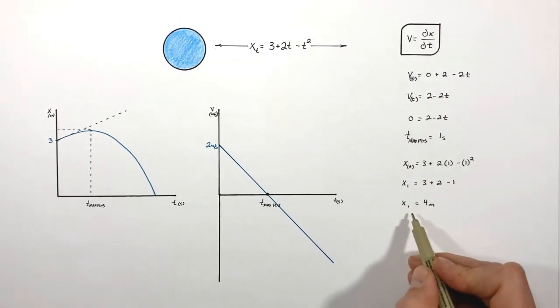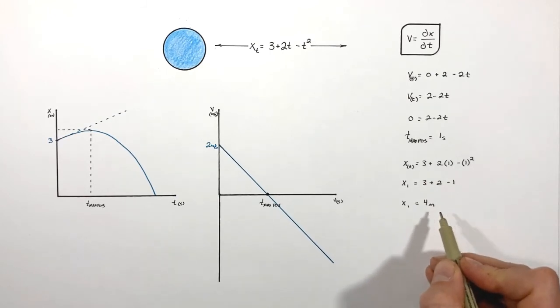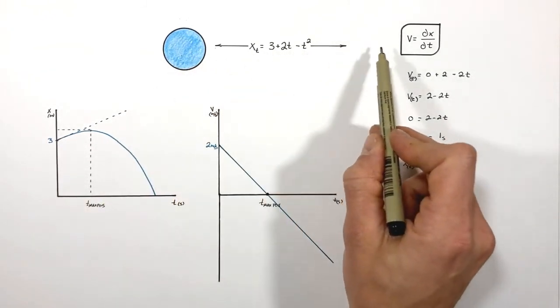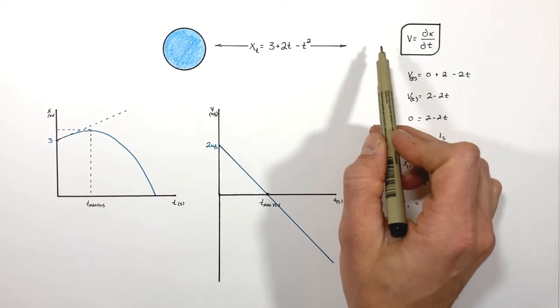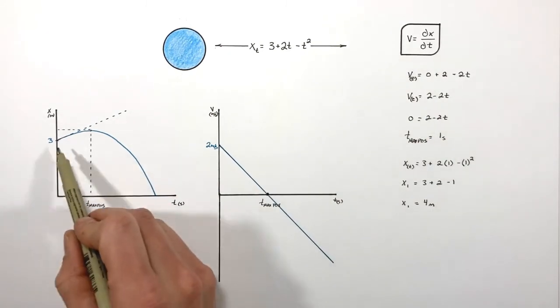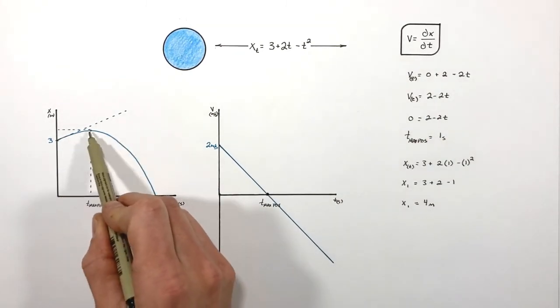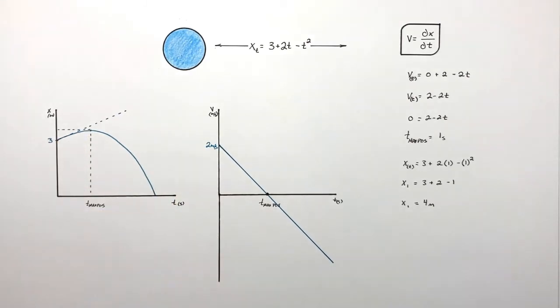And we're left with a position at a time of 1 second equal to 4 meters. That means the farthest this particle ever moves to the right is a position of 4 meters, or on our graph the highest this ever gets, this point right here, is at a height of 4 meters.